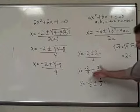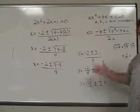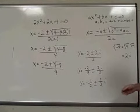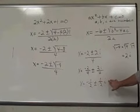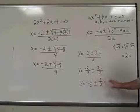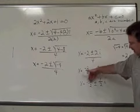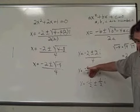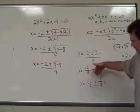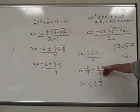So the two complex number solutions to that quadratic equation would be negative 1 half plus 1 half i and negative 1 half minus 1 half i. The negative 1 half is the real number part of the complex number solution. 1 half i is the imaginary part.